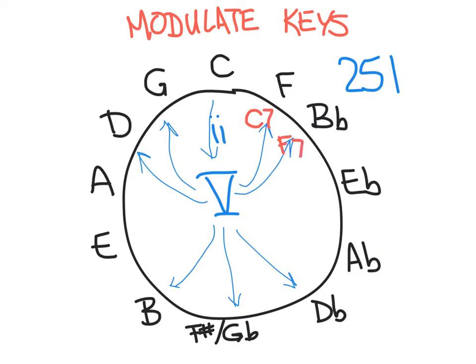So, dominant of F would be a C. Dominant of B-flat would be an F. Dominant of D-flat is an A-flat. Dominant of G-flat is a D-flat. I don't know if you'd ever want to go from C down to B, but the 5 would be an F-sharp.